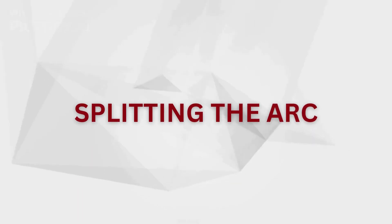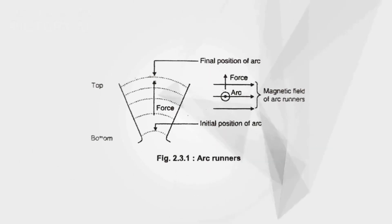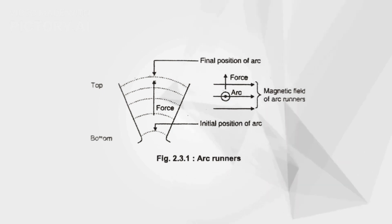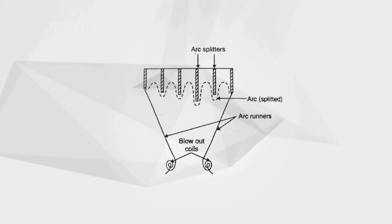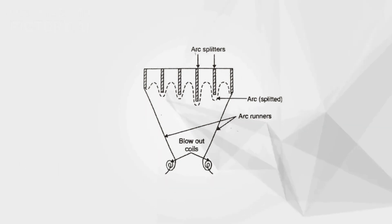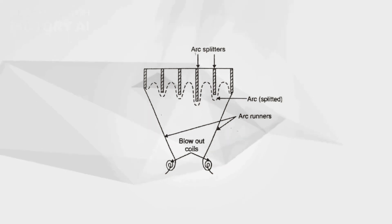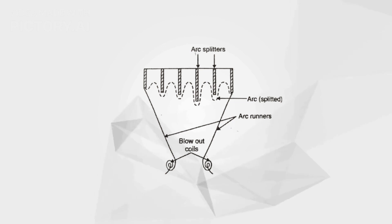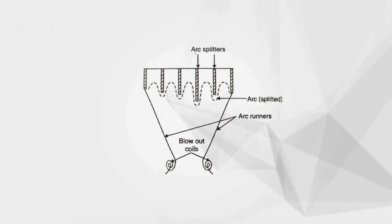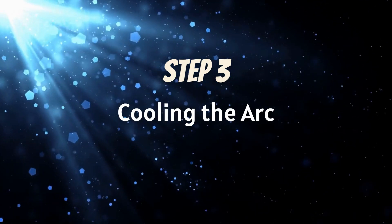Step 2 — Splitting the arc: The arc is elongated by means of arc runners, and its length can be further increased by splitting the arc. Arc splitters are used for this purpose. The arc splitters are made up of resin-bonded fiberglass and are located at the top of arc runners, placed in a perpendicular direction. The blowout coils produce a strong magnetic field that pushes the arc toward the arc splitters.